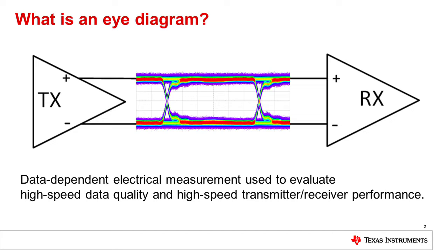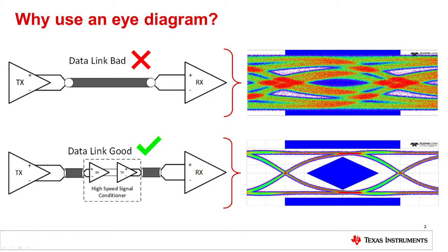Eye diagrams are commonly used when simulating systems, evaluating products, and debugging system level issues. Generally, these systems contain a high speed data link, such as USB, DisplayPort, HDMI, Ethernet, and many more.